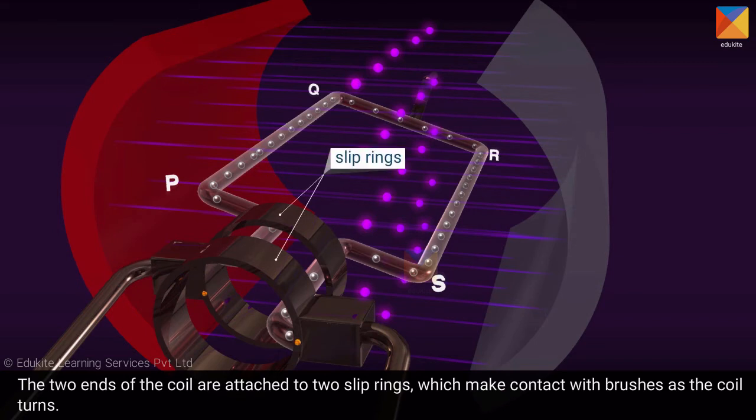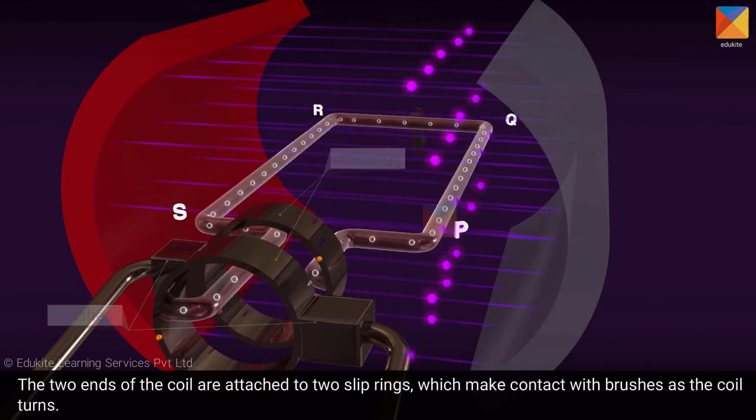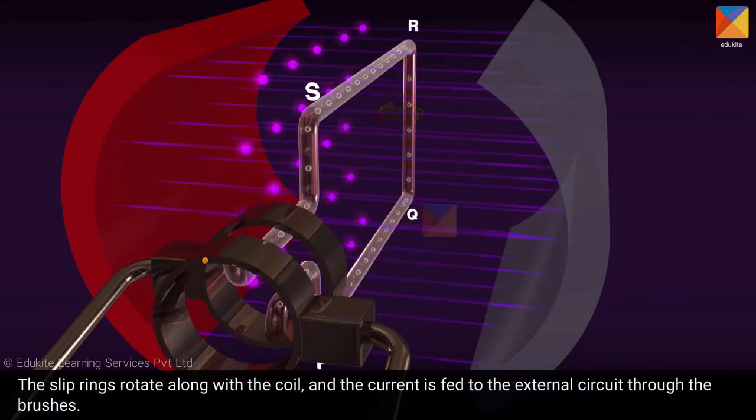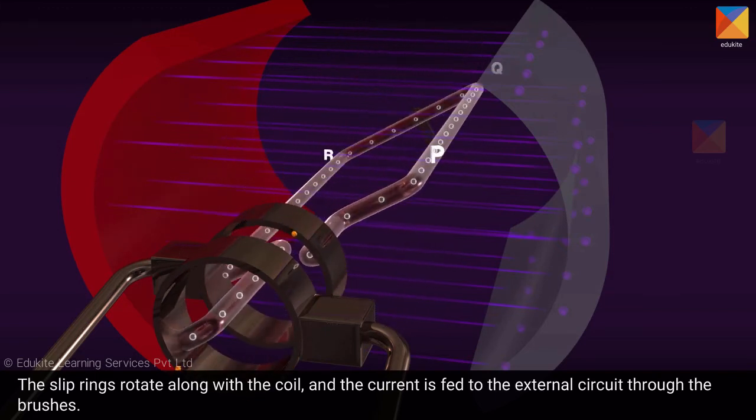The two ends of the coil are attached to two slip rings, which make contact with brushes as the coil turns. The slip rings rotate along with the coil, and the current is fed to the external circuit through the brushes.